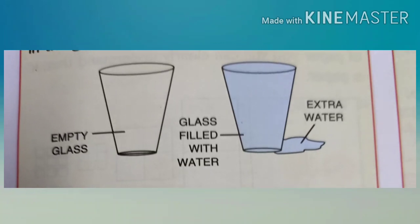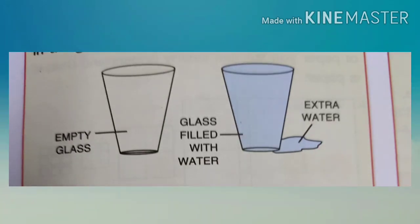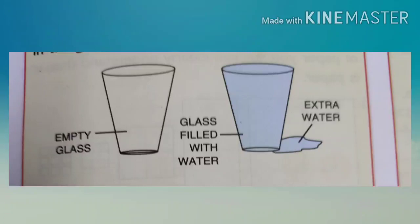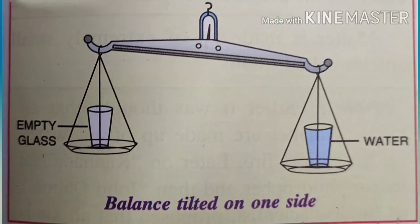Water has mass — this can be proved by another activity. Take two identical glass tumblers and fill one of them with water. Pour some more water into it and observe: the extra water flows out because there is no more space left, as the water poured earlier has already occupied the space. Now place the empty tumbler and the one filled with water on the two pans of a weighing balance. The pan with the glass of water tilts to one side, showing that water has mass.